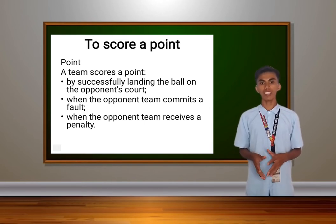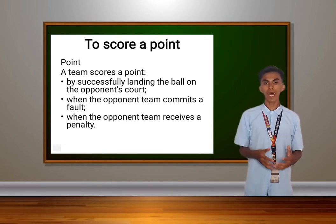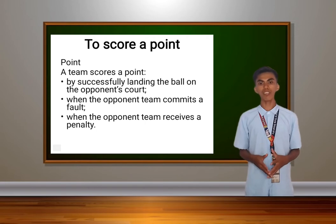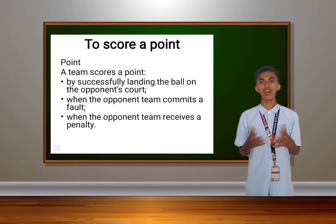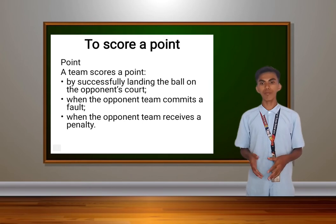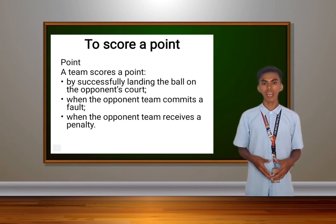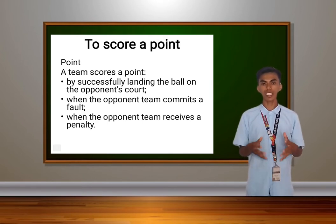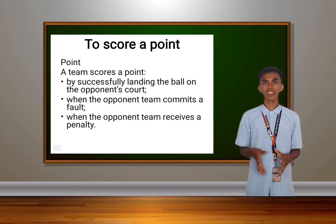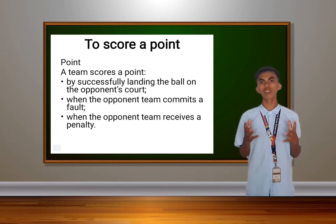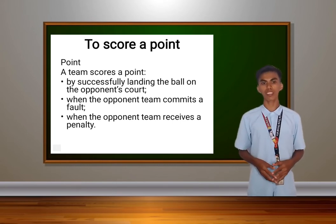A team scores a point by successfully landing the ball on the opponent's court. Next, when the opponent team commits a fault. And last, when the opponent team receives a penalty. So those are the ways on how to score a point.